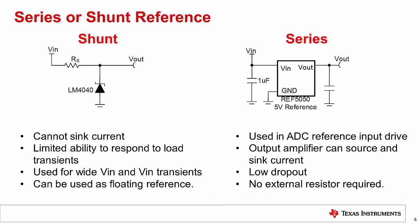Before reviewing different reference specifications, we should cover the main difference between the two different types of voltage references: the shunt and the series. The shunt reference acts very similar to a Zener diode. Current through the shunt reference is set by a series resistance. The shunt reference does not have an amplifier buffered, so it cannot sink current. Because of their limited ability to respond to load transients, these references are generally not used when driving switch capacitor reference inputs.